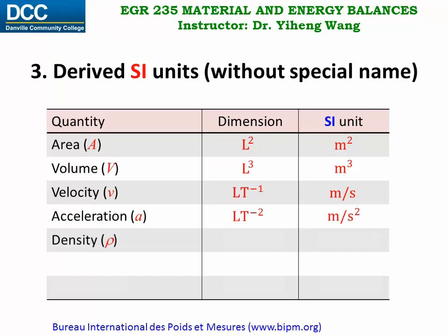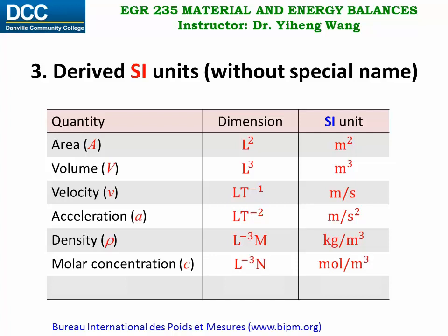Density is defined as mass over volume, therefore its SI unit is kilogram per cubic meter. Molar concentration is defined as the amount of substance over volume, therefore its SI unit is mole per cubic meter. And of course the list goes on.